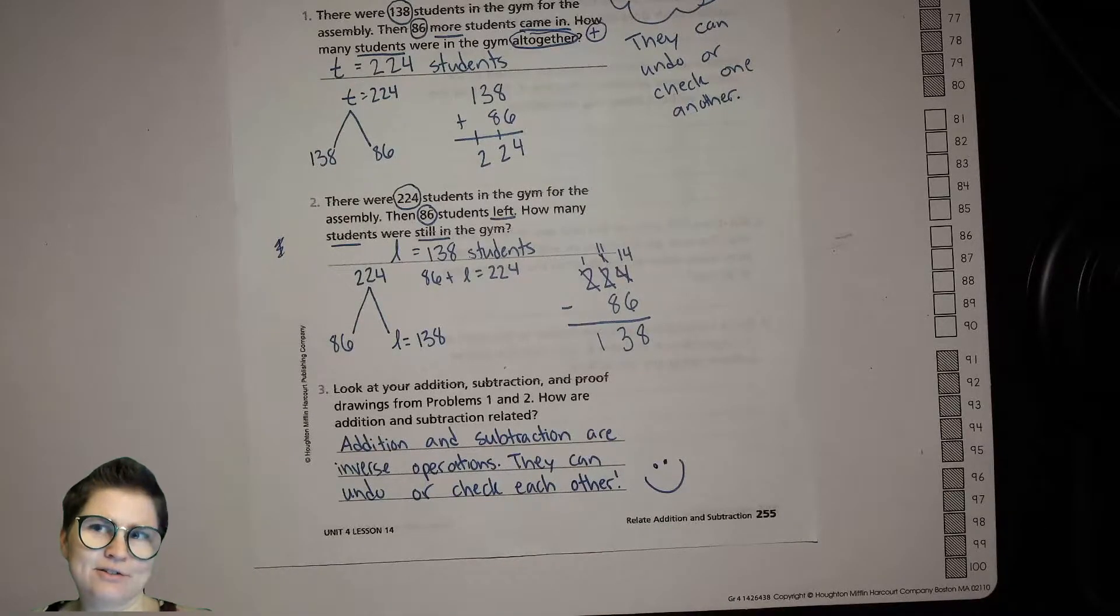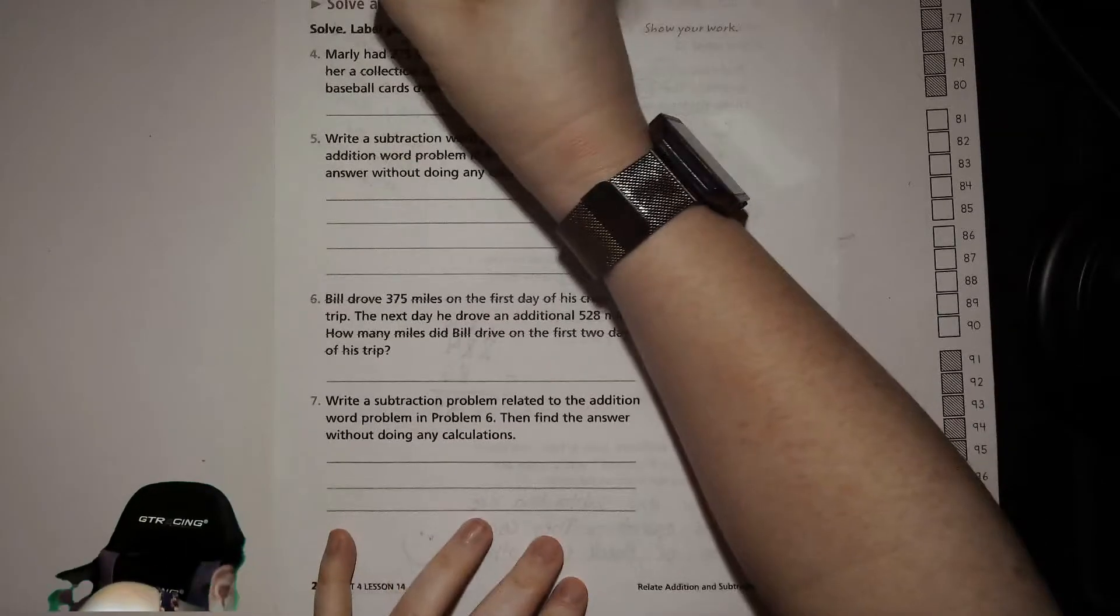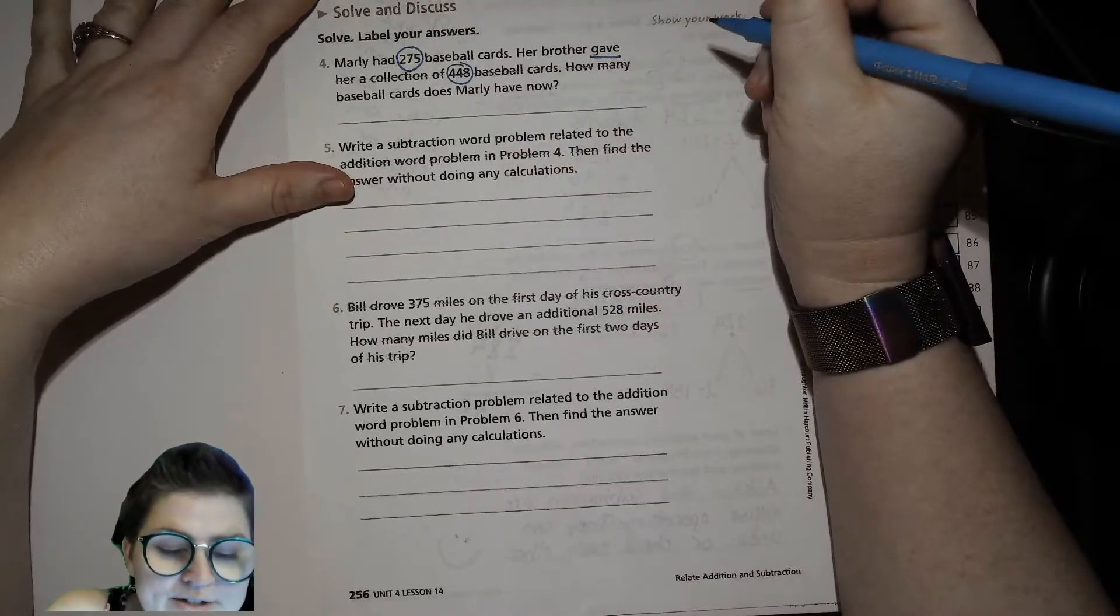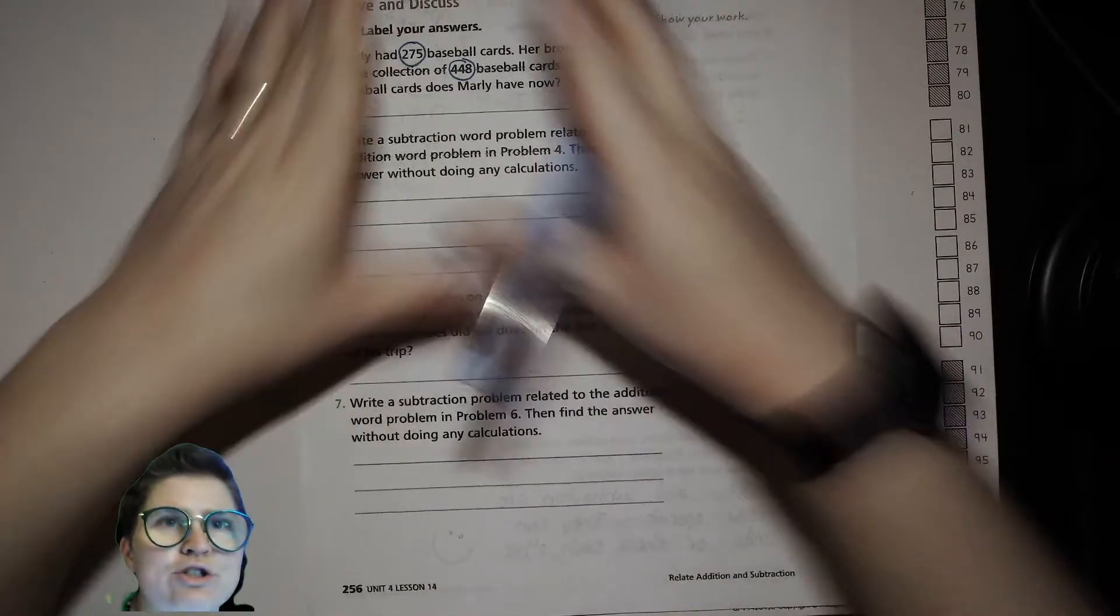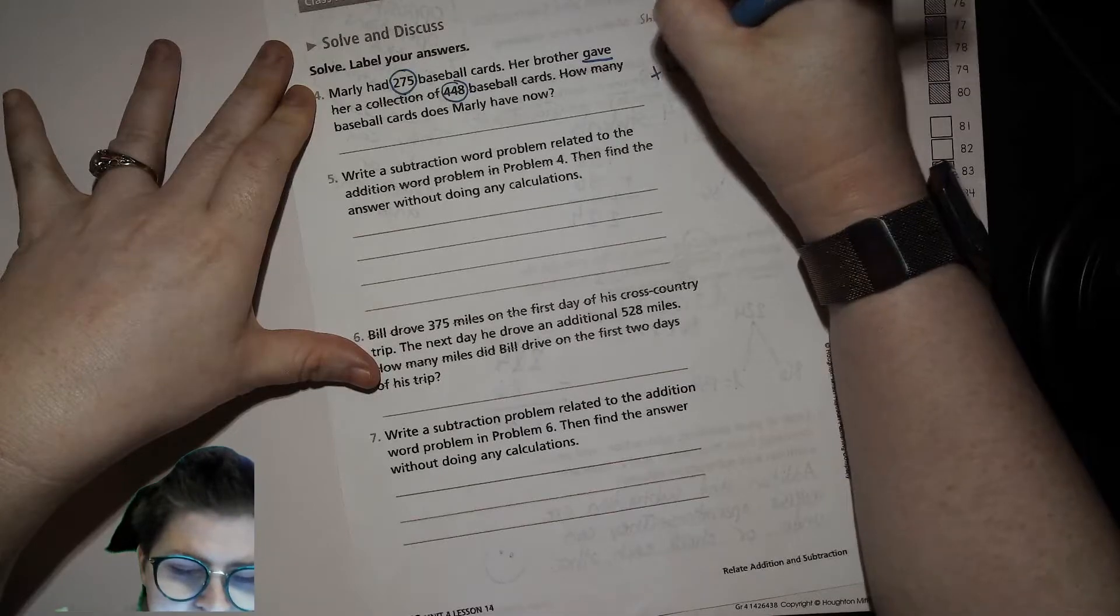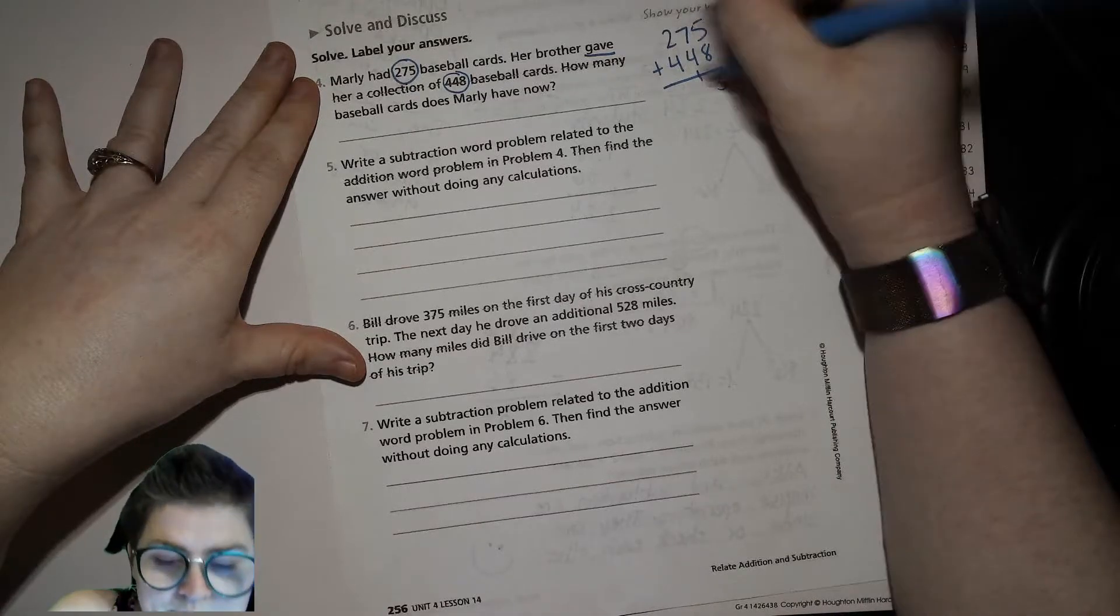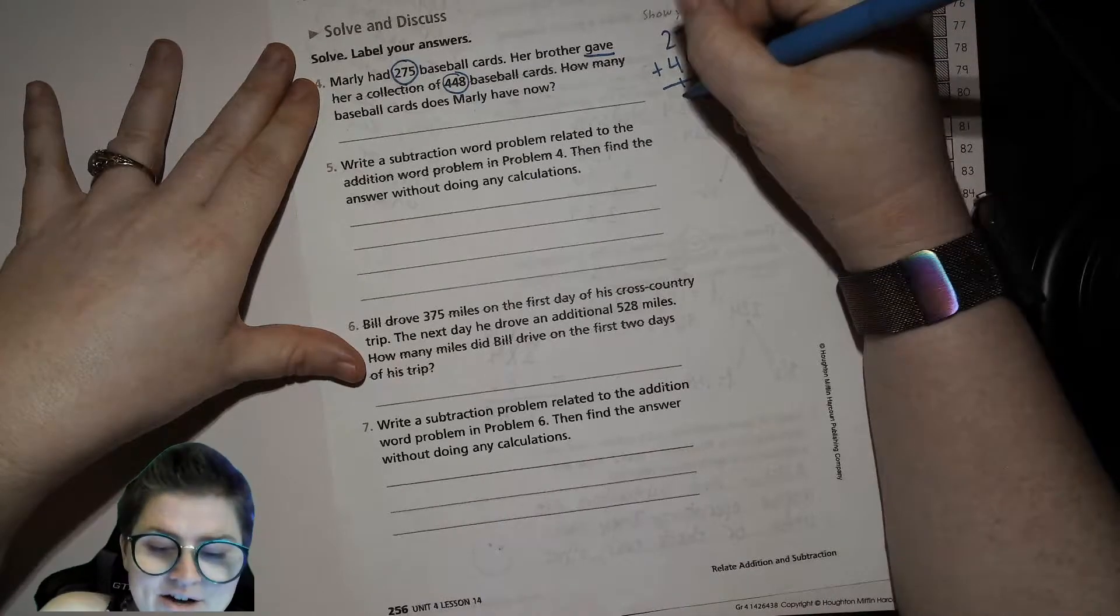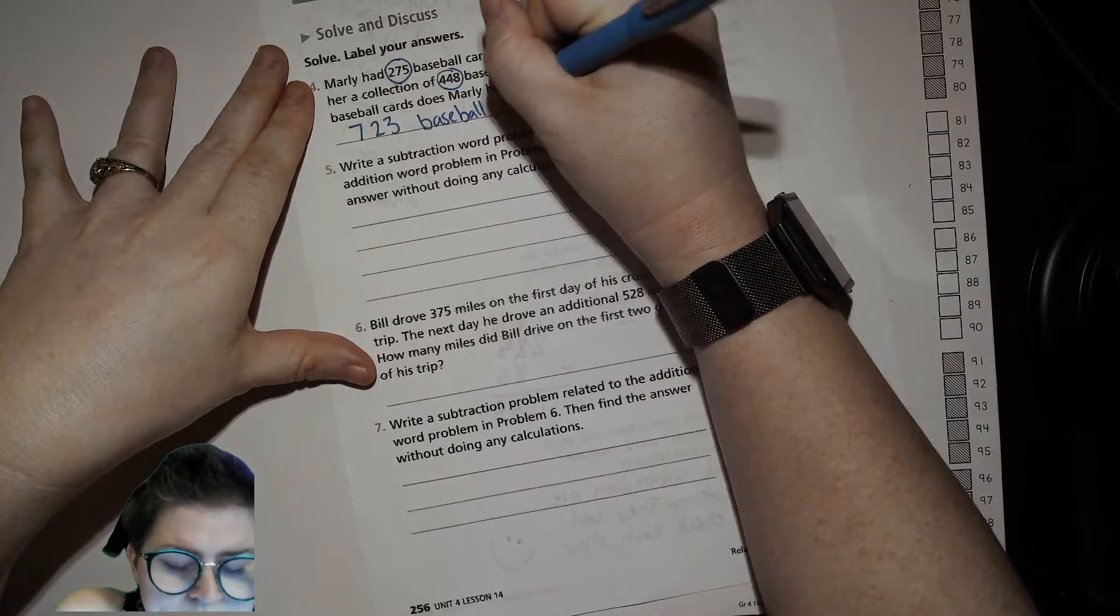All right, feeling good! Let's flip. Solve, label your answers. Marley had 275 baseball cards. Her brother gave her a collection of 448 baseball cards. How many baseball cards does Marley have now? So she had some, her brother gave her more, she's pushing them together, so we're going to add to get that total. So we'll do 275 plus 448. 5 plus 8 is 13, 7 plus 4 is 11 plus one more is 12, and then 200 plus 400 is 600 plus one more, 700. 723 baseball cards.